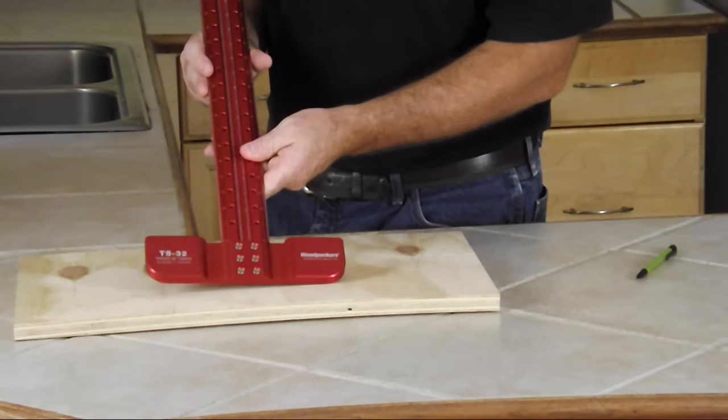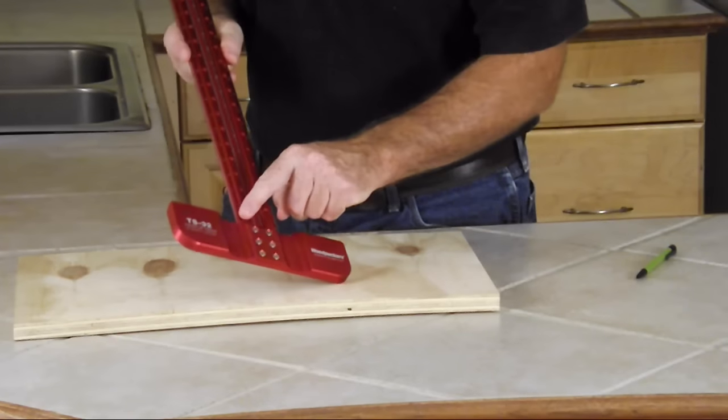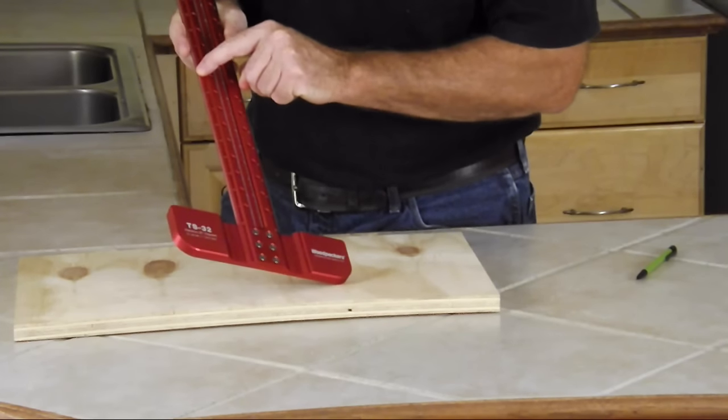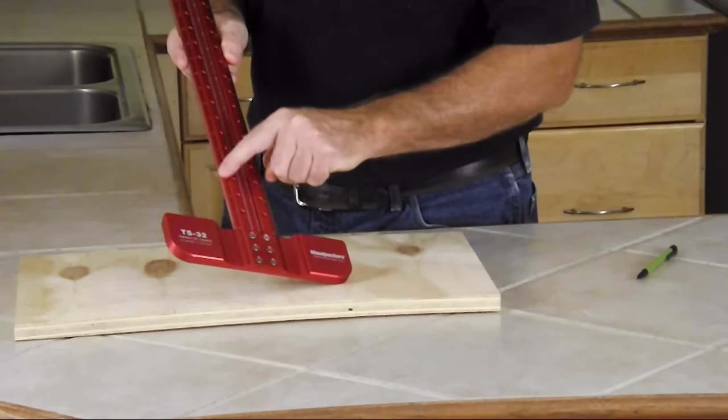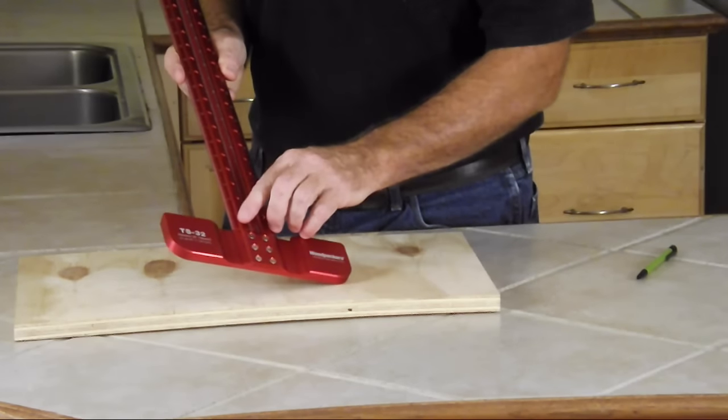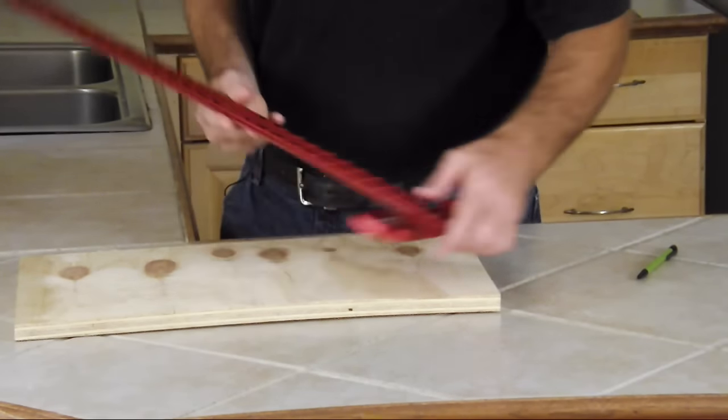But it makes layout a breeze. Let me show you why. First off, there's a bevel cut right here of 30 degrees, which lays it right on the work for you. And it's divisible by 30 seconds of an inch.